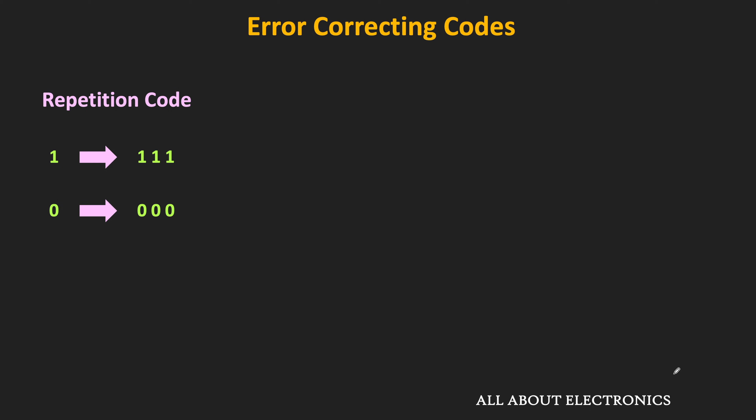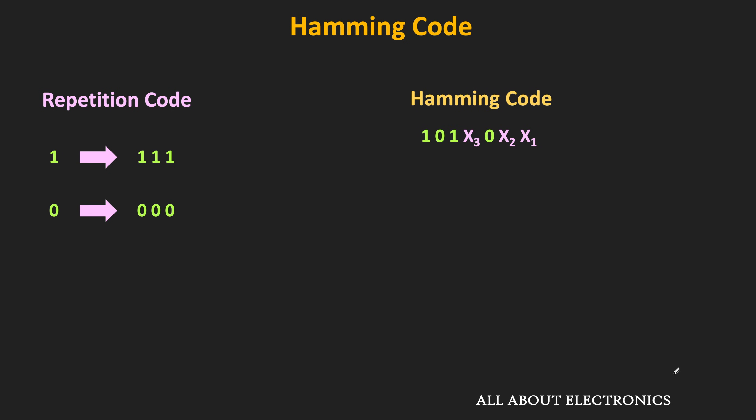That means two-thirds of the total bits are redundant bits. So for the same number of error correction, the efficiency of the code can be improved with the help of the Hamming code. In the Hamming code, instead of sending the same bit multiple times, the extra bits are parity bits. These parity bits represent the parity of certain bits in the overall code. Let us see how many parity bits are required for a one bit of error correction.